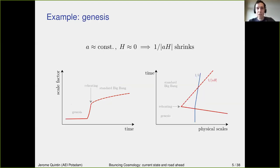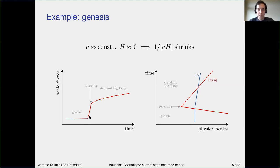Another possibility is a genesis scenario, where the scale factor could be almost constant — quasi-static. At this point the Hubble parameter is approximately vanishing, so the Hubble radius, the inverse of this, is almost infinite. Initially any fluctuations will be inside the horizon. But if the universe suddenly expands and standard big bang cosmology starts after that, the Hubble radius will shrink very rapidly. Fluctuations exit the Hubble radius, evolve on super-Hubble scales, and re-enter later during standard big bang.